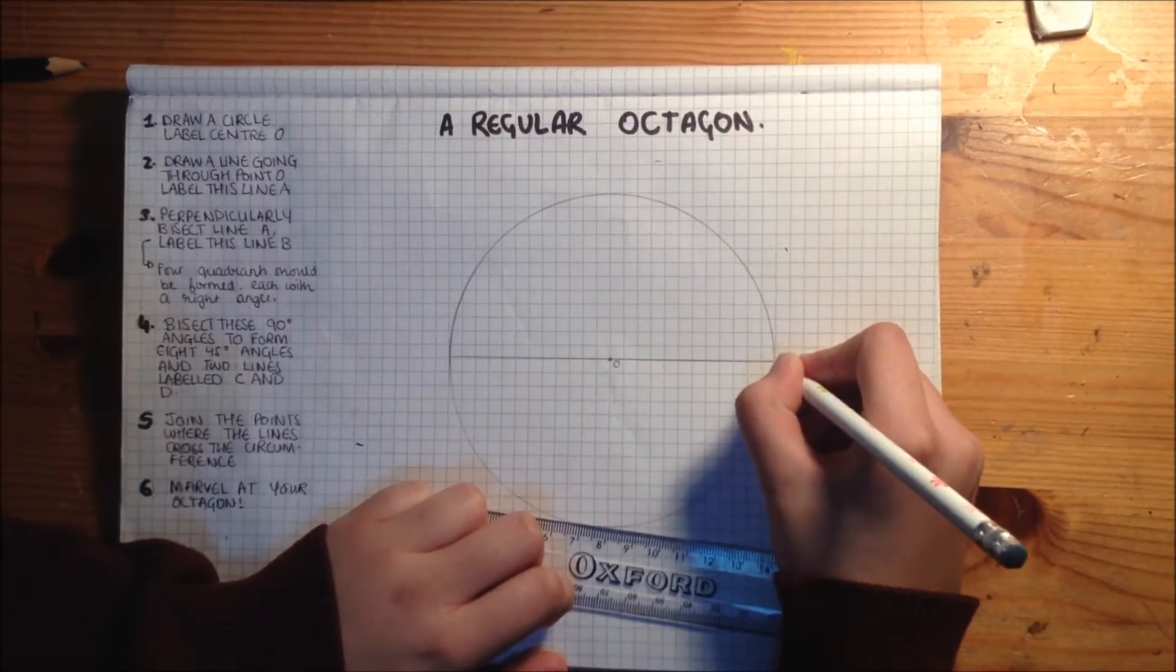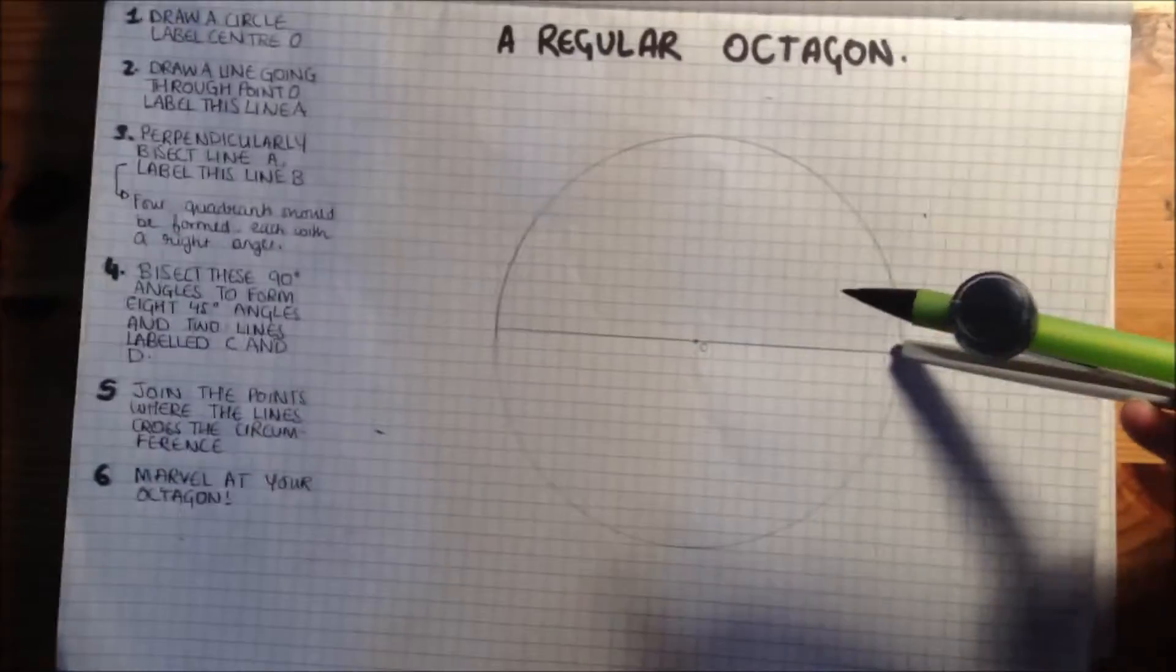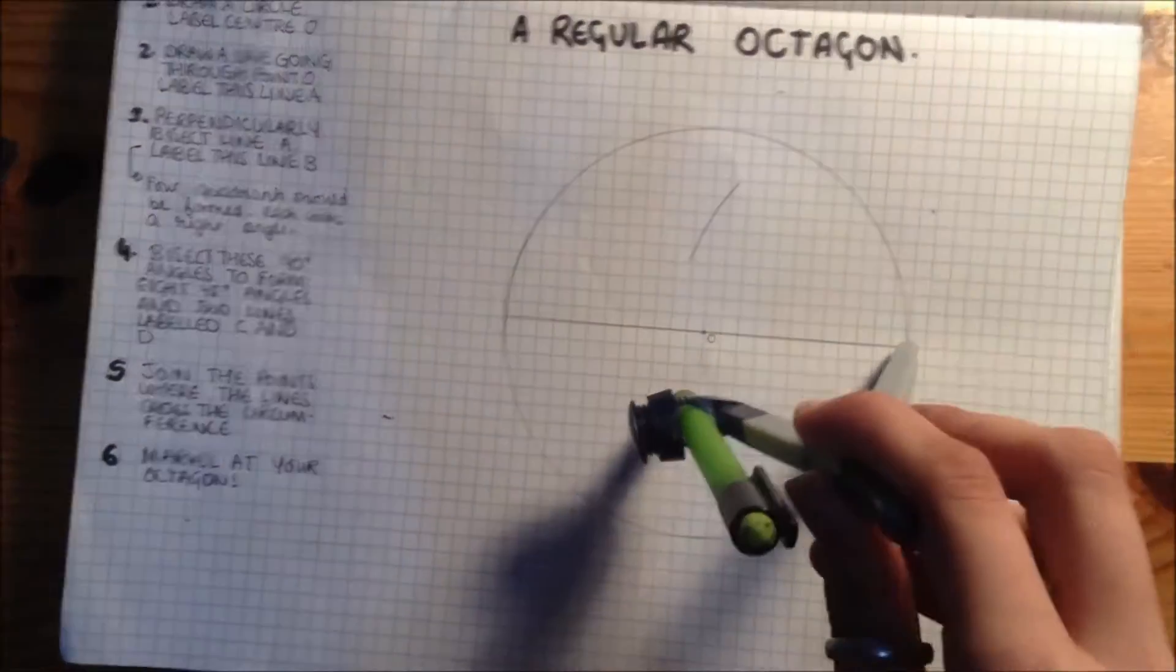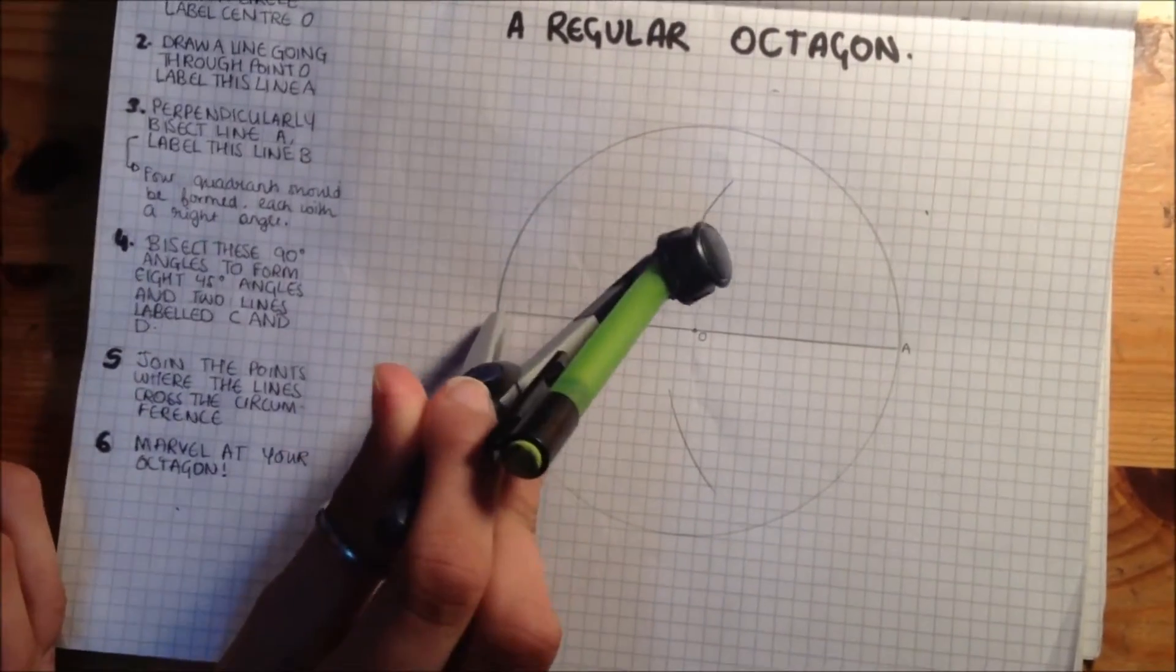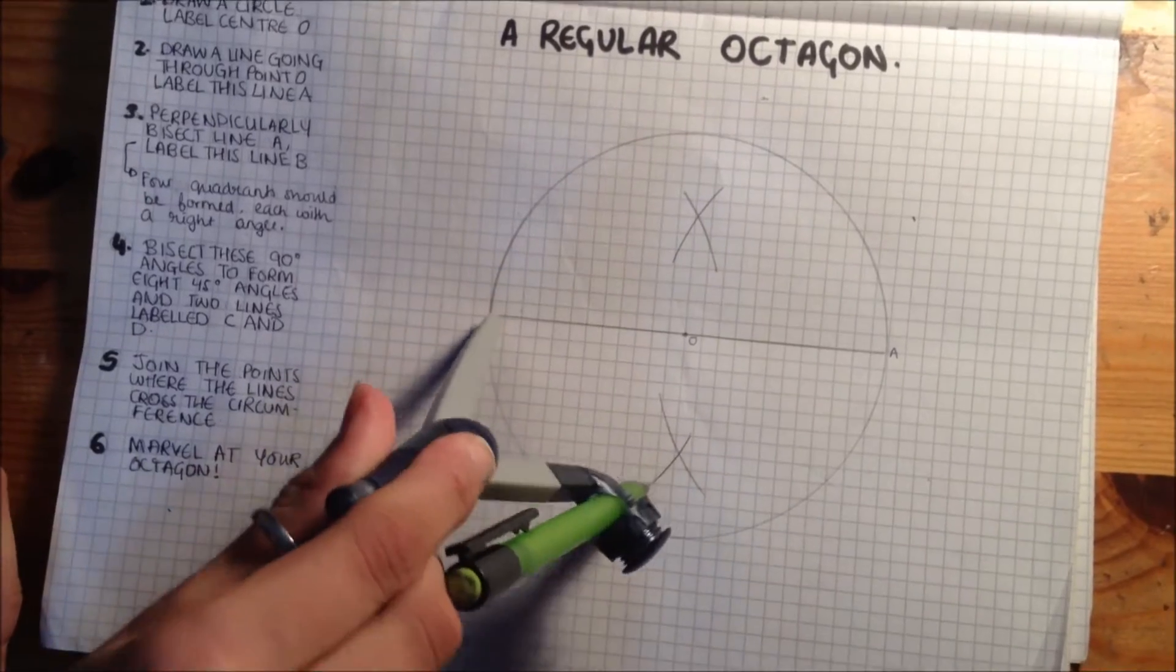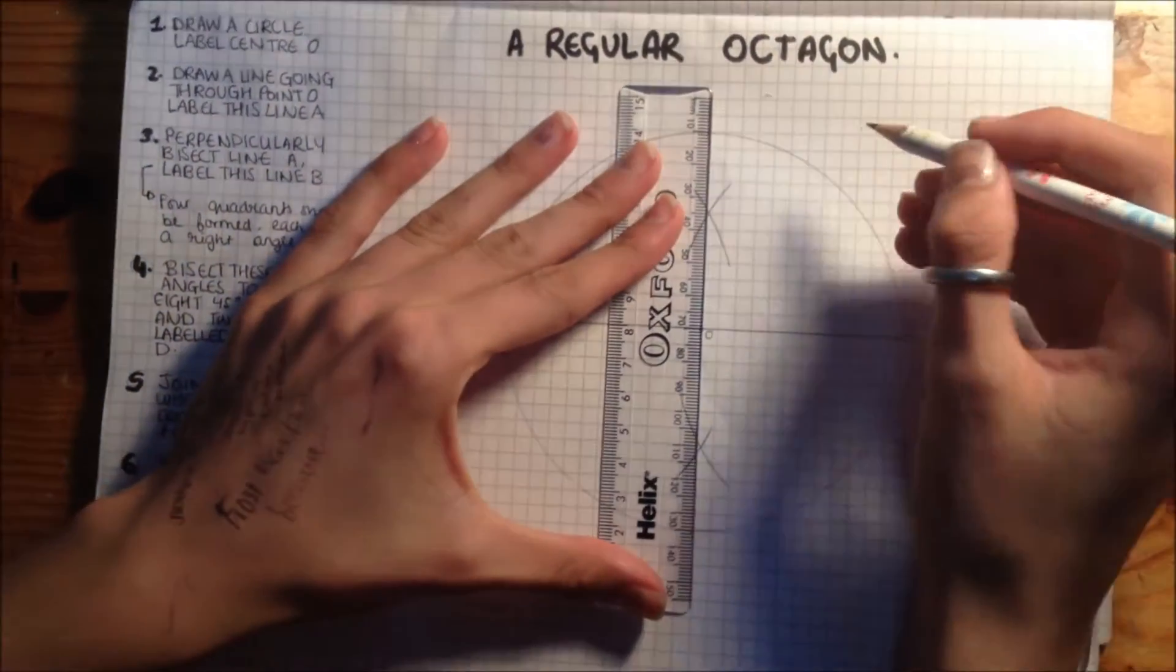This is point A. You can perpendicularly bisect line A, and this will give you another line, which you can label line B.